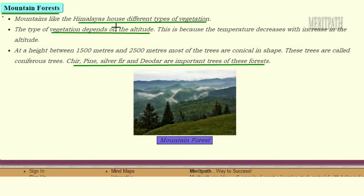The fifth type of vegetation is mountain forest, usually found in mountain regions such as the Himalayan mountains. The Himalayan mountains have different types of plants depending on altitude — meaning the height of the mountain. As altitude increases, temperature decreases. At a height of 1500 to 2500 meters, most trees are found in a conical shape, and because of this shape they are known as coniferous trees.